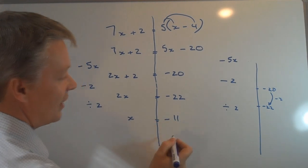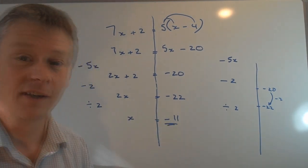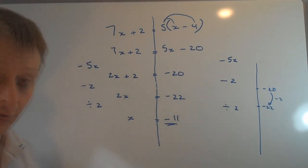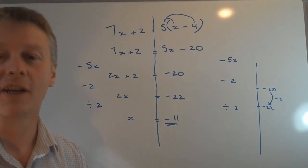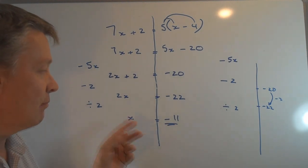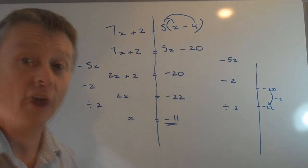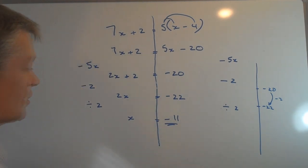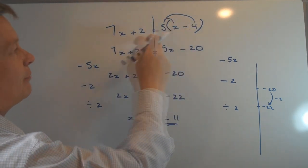And minus 22 divided by 2 is minus 11, and that's the answer to this particular equation. Now I need to prove it, and it's a good habit for an exam to make sure that you just do a very quick check to prove that it's correct for you.